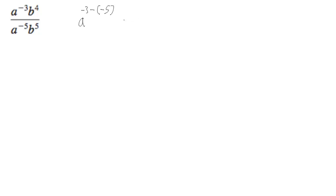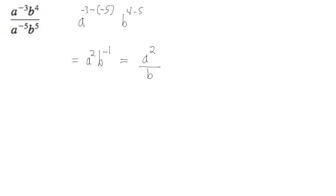And we get b raised to the fourth minus five. So this is going to give us a to the negative three plus five, which is a squared. And then b raised to the negative one. And if you want positive exponents, it's going to be a raised to the second over b. That's it.